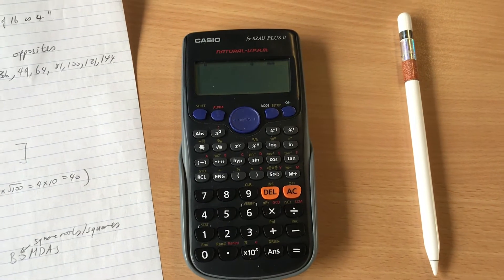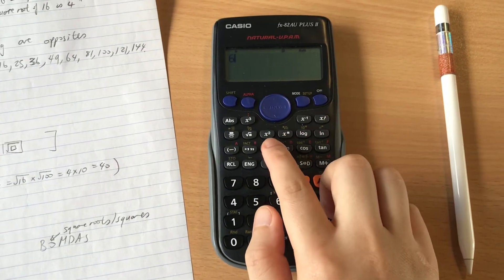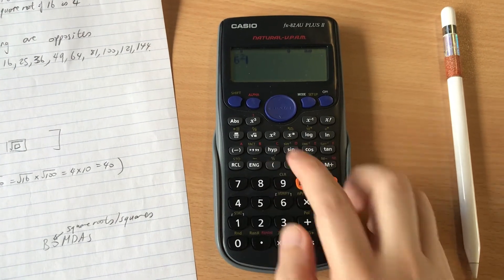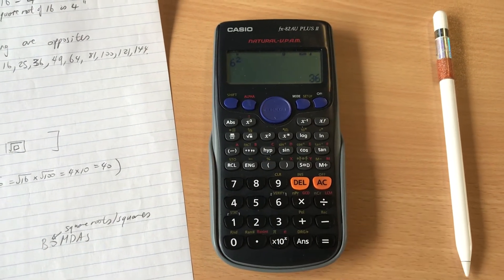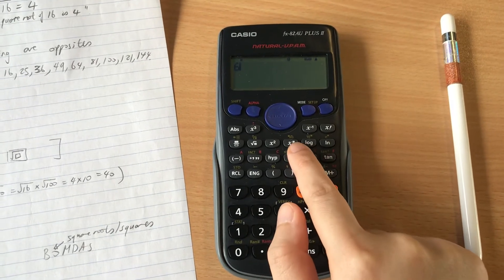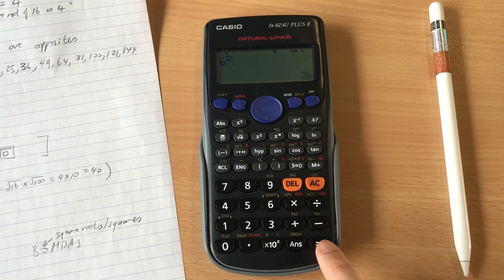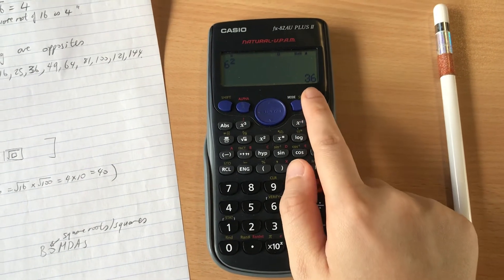So example 1, I was saying work out 6 squared, so you would go 6 squared button here, so x squared here, so press that and press equals and you get 36. Or you can press 6x with a little box on top and you can press 2 because it's power of 2, that's what square means, and press equals and you get 36.